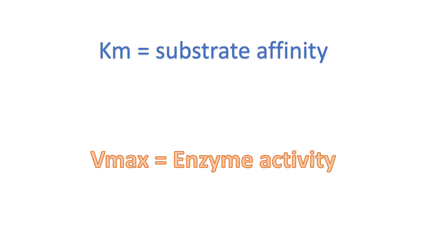To summarize: KM is all about substrate affinity, but Vmax is all about enzyme activity — it's how fast the enzyme would work if given enough substrate, that is, if it's fully saturated. Now that we understand KM and Vmax, let's look at the difference between competitive and non-competitive inhibitors.